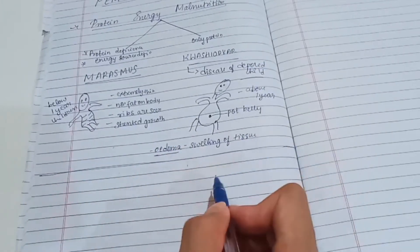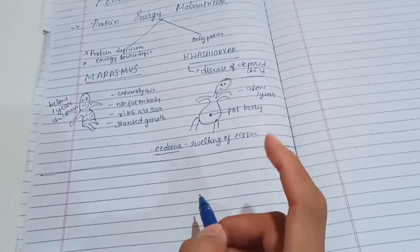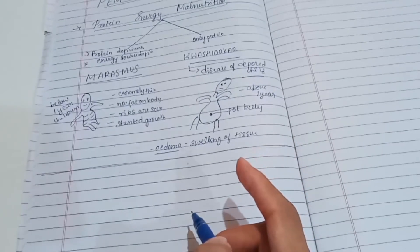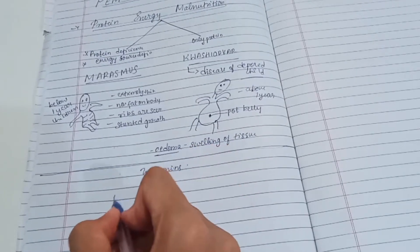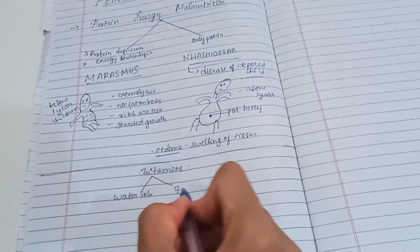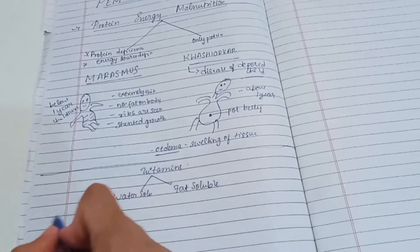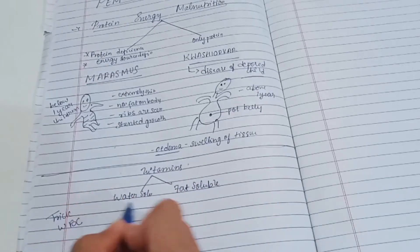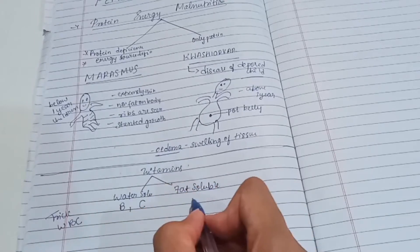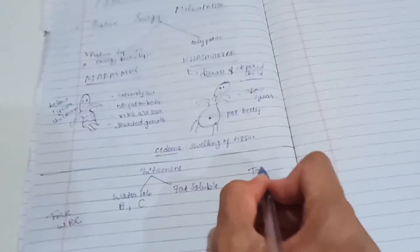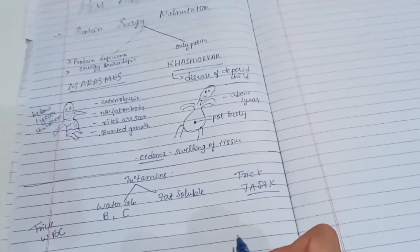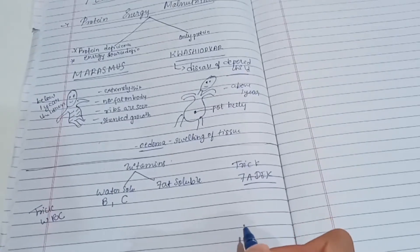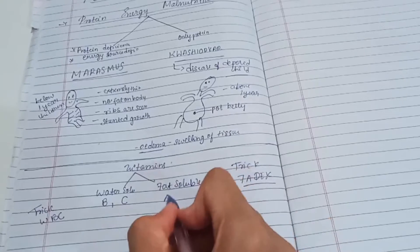Now we have Vitamin Deficiency disorders. There are two types of vitamins: water-soluble and fat-soluble. For a memory trick, water-soluble vitamins are Vitamin B and C — remember WBC. Fat-soluble vitamins are A, D, E, K — remember ADEK.